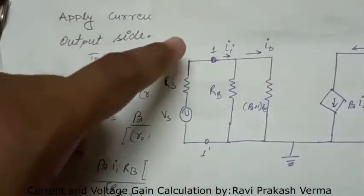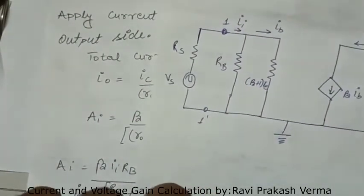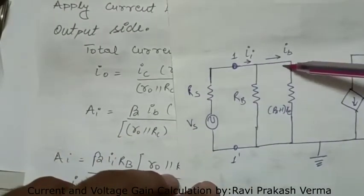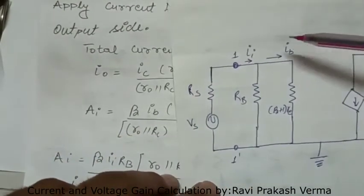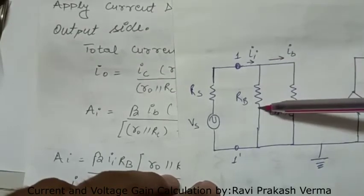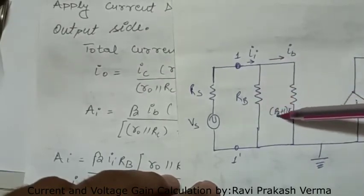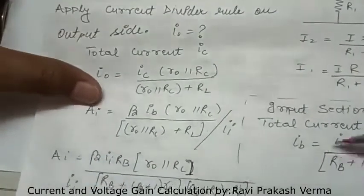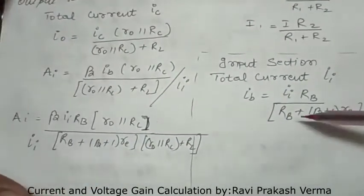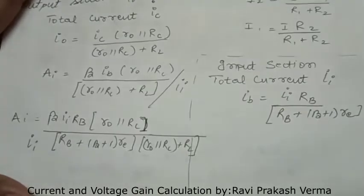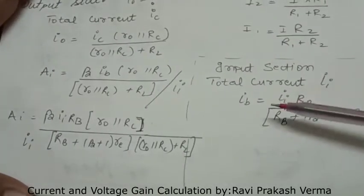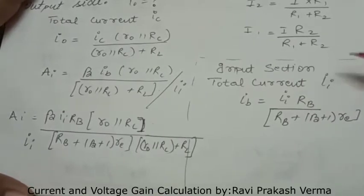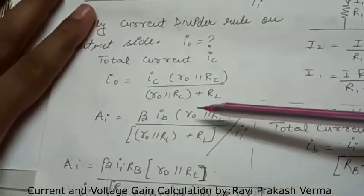Applying the same current divider rule at the input section, we can write the value of IB. IB equals II times RB, divided by RB plus (beta plus 1) times RE.